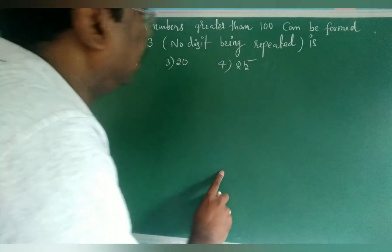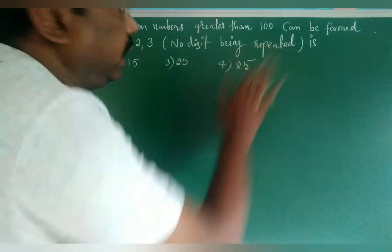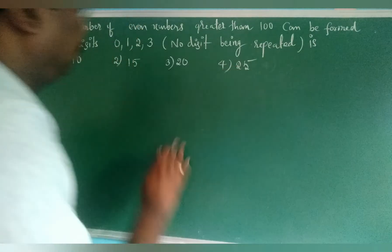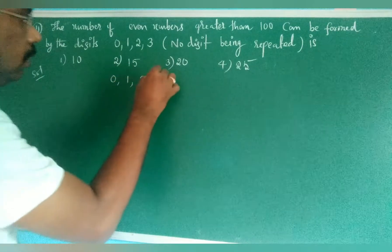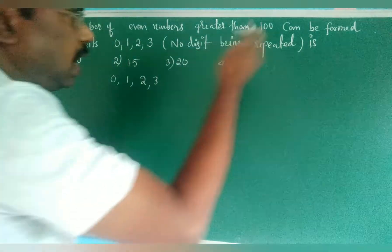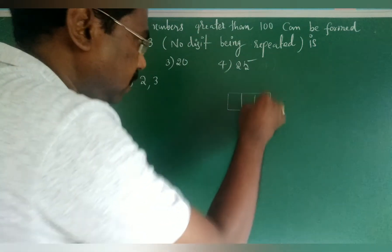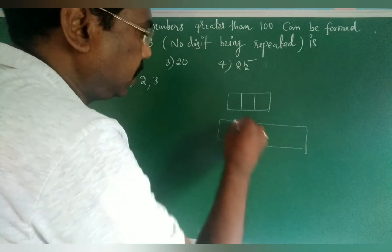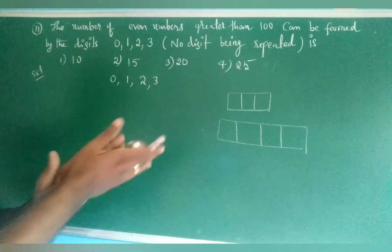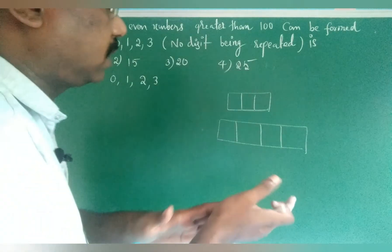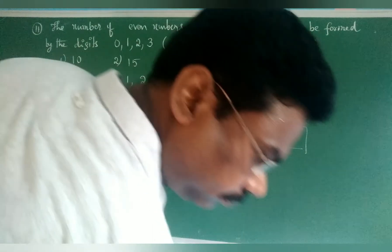Problem 4: Find the number of even numbers greater than 100 that can be formed from the digits 0, 1, 2, 3, with no digit repeated. Given digits: 0, 1, 2, 3. Greater than 100 means we need 3-digit even numbers and 4-digit even numbers.